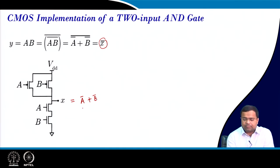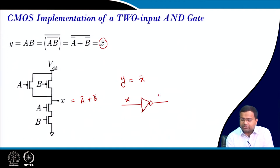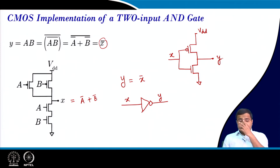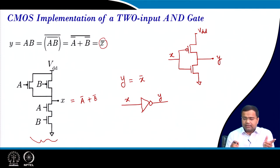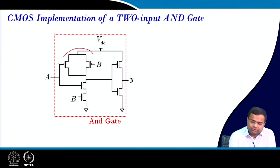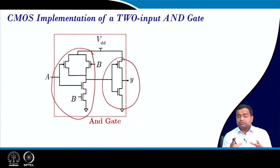Once we have X, which is a combination of A-bar plus B-bar, we can write Y which is X-bar. If X is the input, it will be an inverter — simply an inverter — that will be our Y. The inverter is implemented by a PMOS connected to VDD and an NMOS below it, with X as input and Y as the output point. So we can implement this AND gate as a NAND gate followed by a NOT gate. The overall architecture of this AND gate using CMOS technology is a NAND gate followed by a NOT gate.